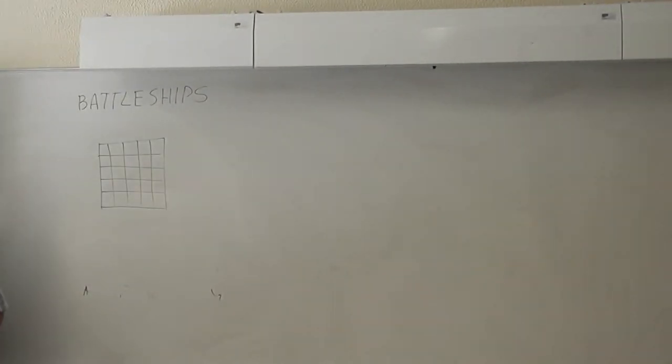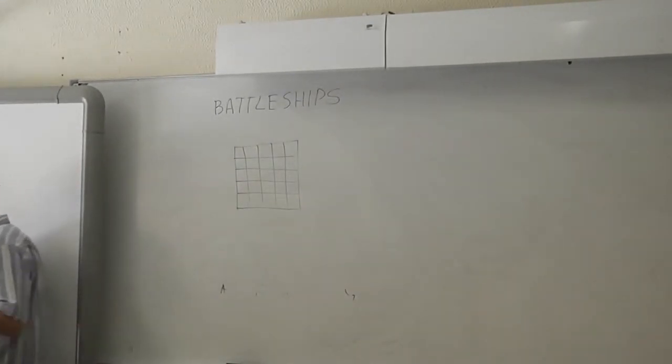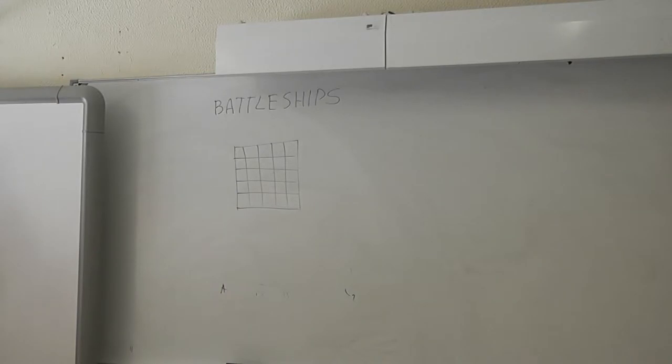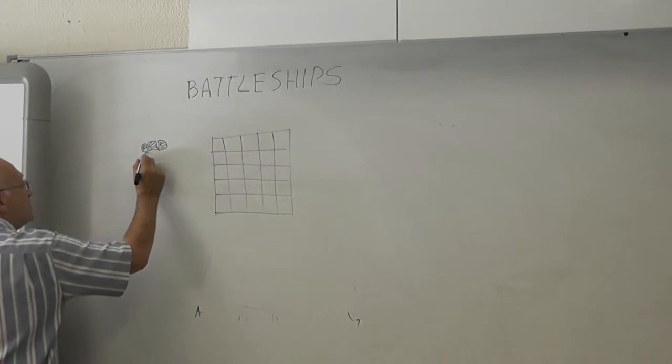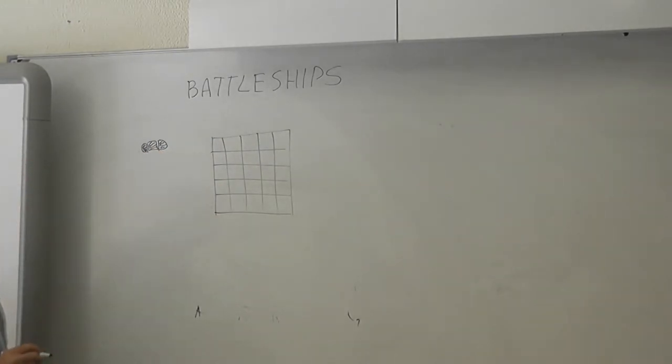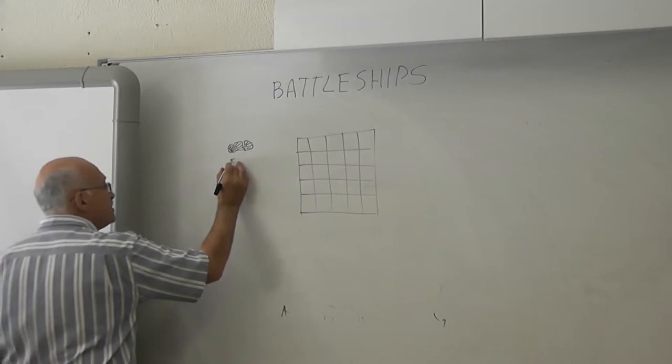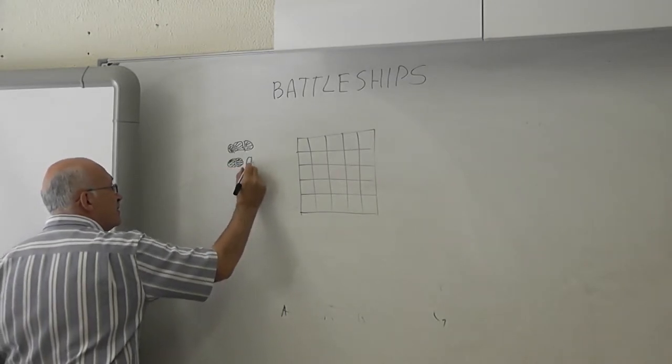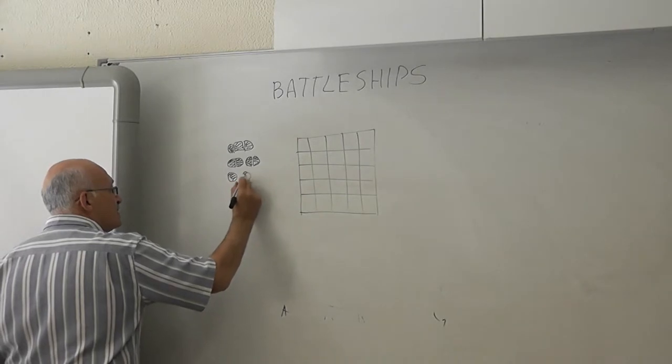Our task is to position ships in this ocean according to some rules. So, for this small game, we have only one, two, three, four, we have only six ships. One ship will be three square ships, three dead ships. Two double ships. So, we draw them this way. And three single ships.